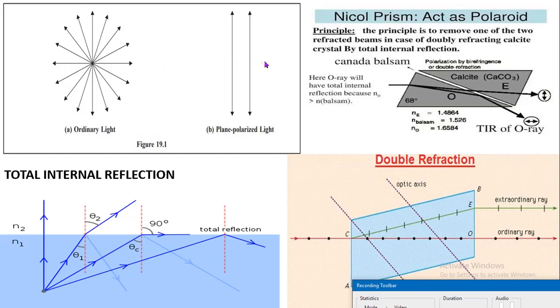The process of transforming unpolarized light into polarized light is known as polarization.